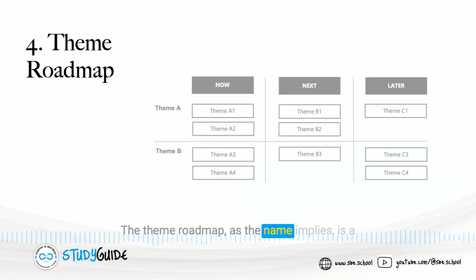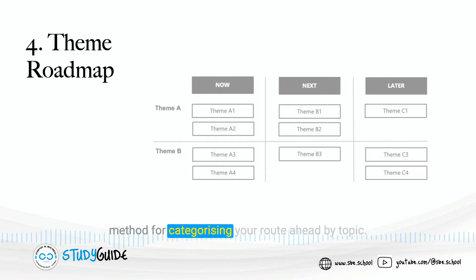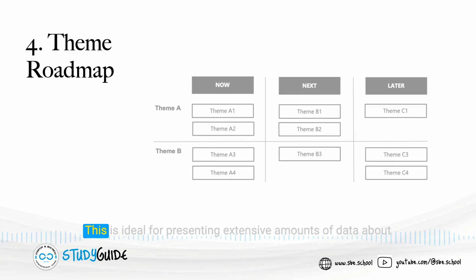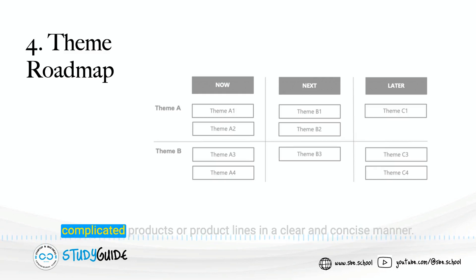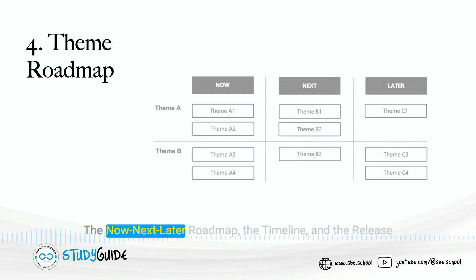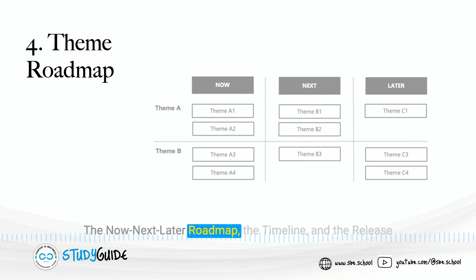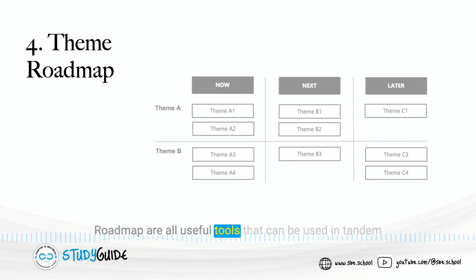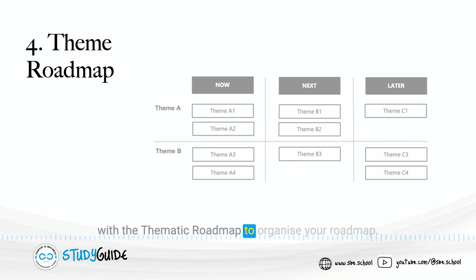The theme roadmap, as the name implies, is a method for categorizing your route ahead by topic. This is ideal for presenting extensive amounts of data about complicated products or product lines in a clear and concise manner. The now-next-later roadmap, the timeline, and the release roadmap are all useful tools that can be used in tandem with the thematic roadmap to organize your roadmap.